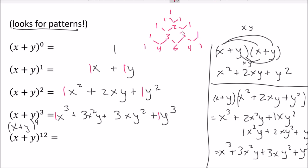This is often referred to as Pascal's triangle. It's something you can generate on your own. You just remember the outside number is 1, and then add the next two to get the next number. So 1 plus 4 gives 5, 4 plus 6 gives 10, 6 plus 4 gives 10, 4 plus 1 gives 5, and then a 1 on the outside. Generating the next row is quite easy.